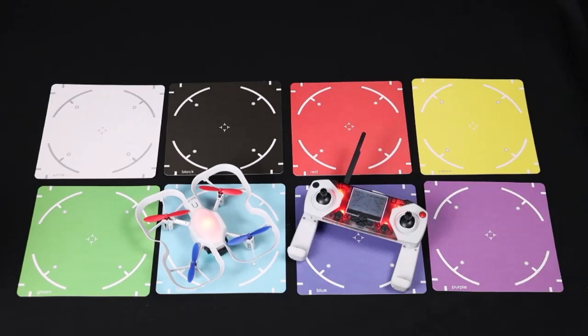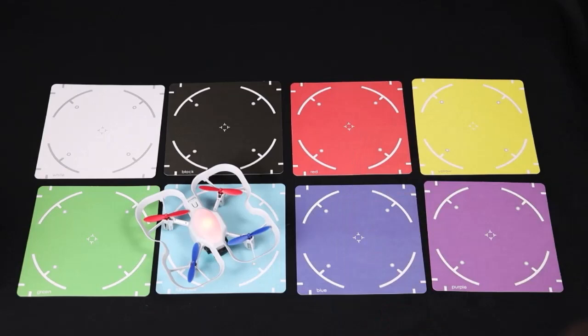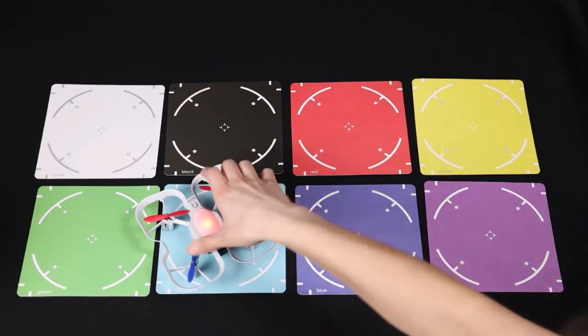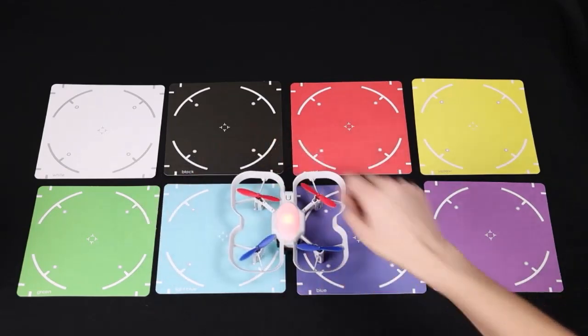When you are calibrating, be sure to set your color cards out in order in a well-lit room. Darker rooms may affect the color reading. Start by making sure that your drone and controller are paired. You will then press the action button on the top of the drone five times.